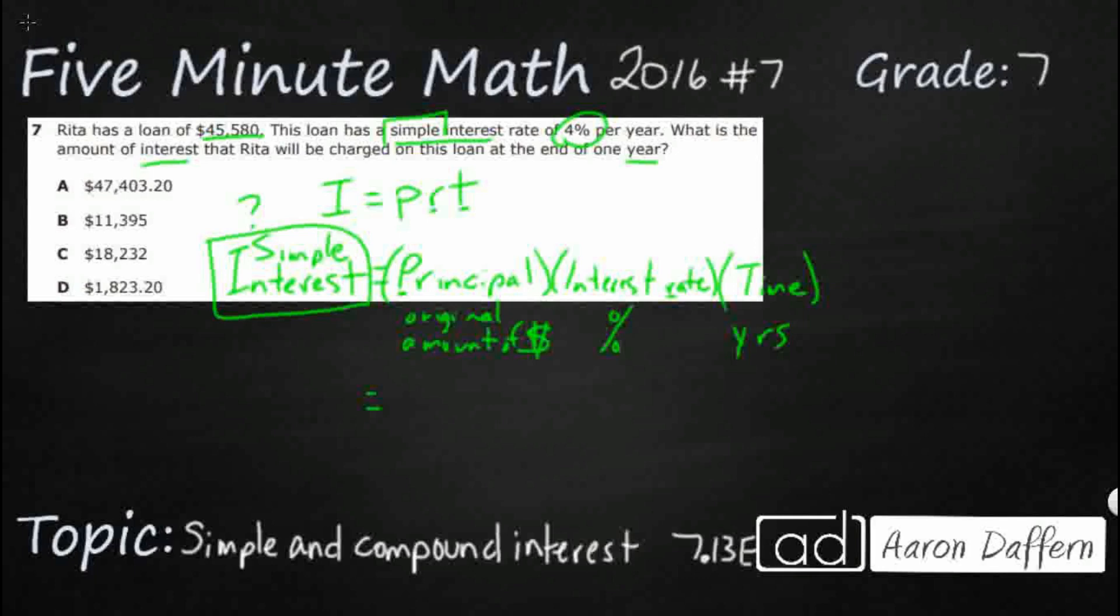Our original amount is $45,580 and multiply that by our interest rate of 4% and the time is right there, one year. So that actually makes that pretty easy, because guess what? Anything times one is itself, so we really don't have to worry about this. So really, we're just multiplying the $45,580 times 4%.